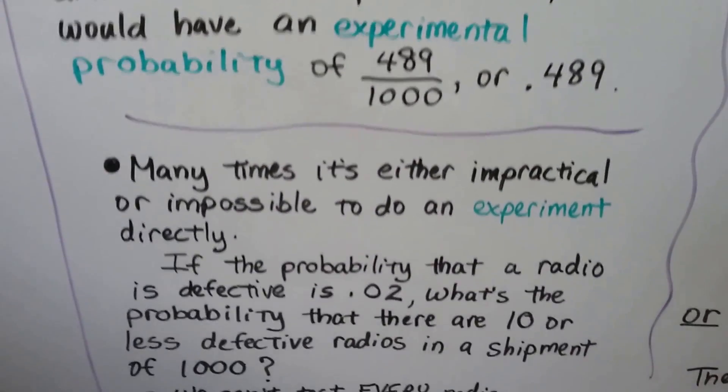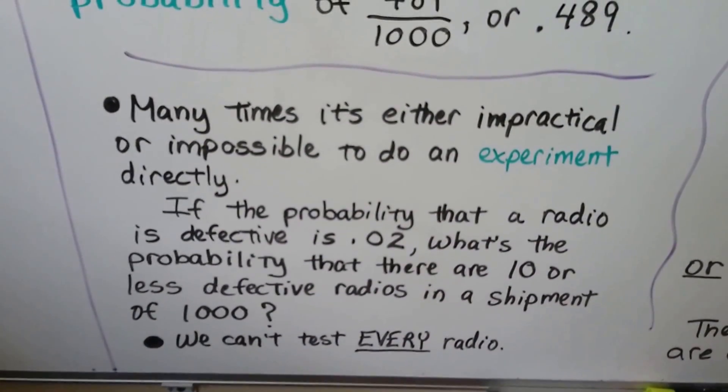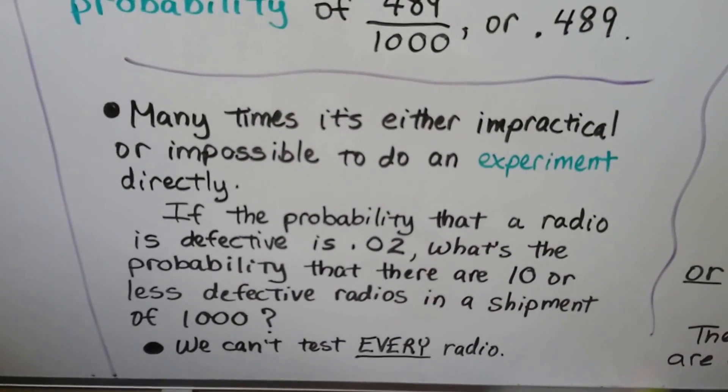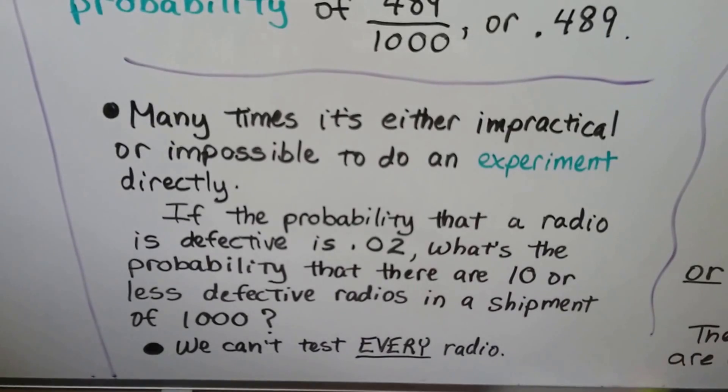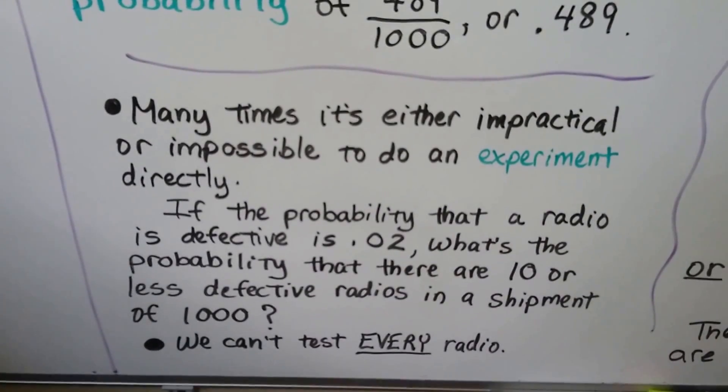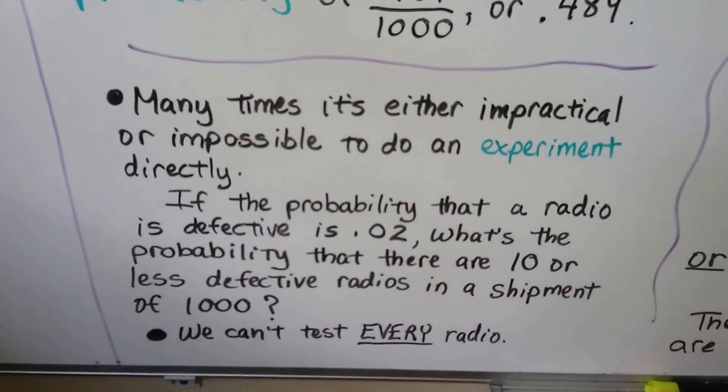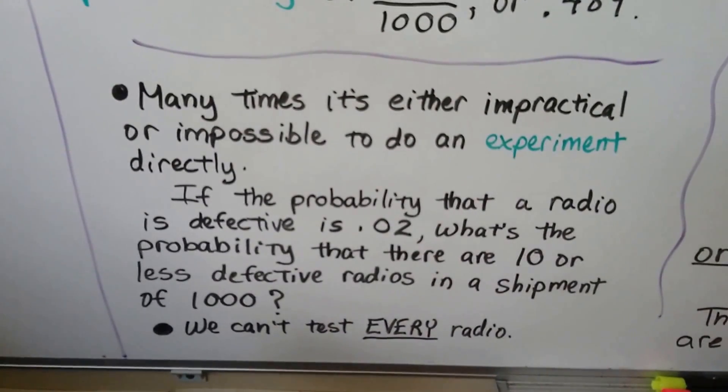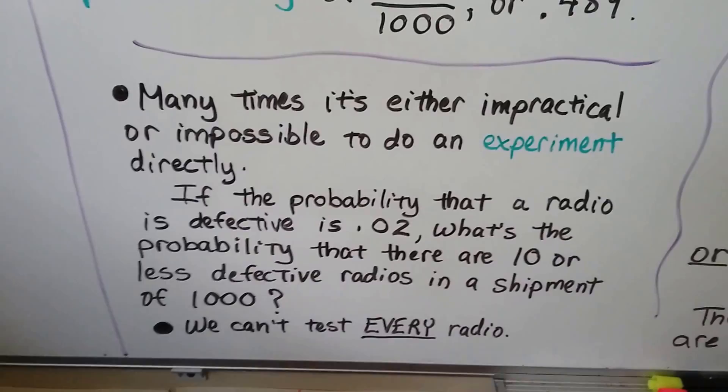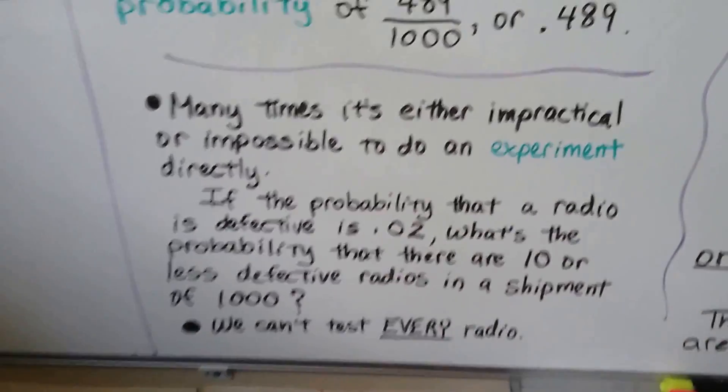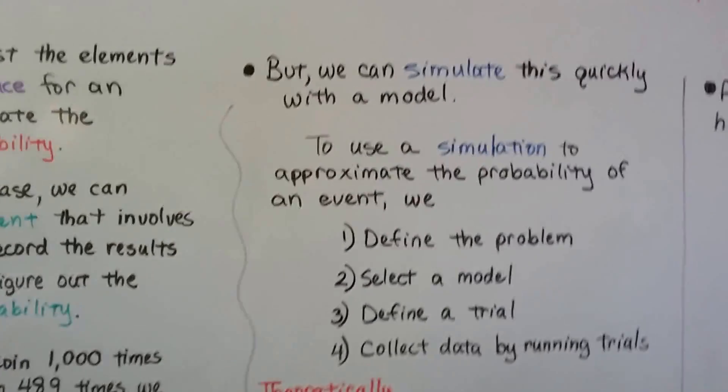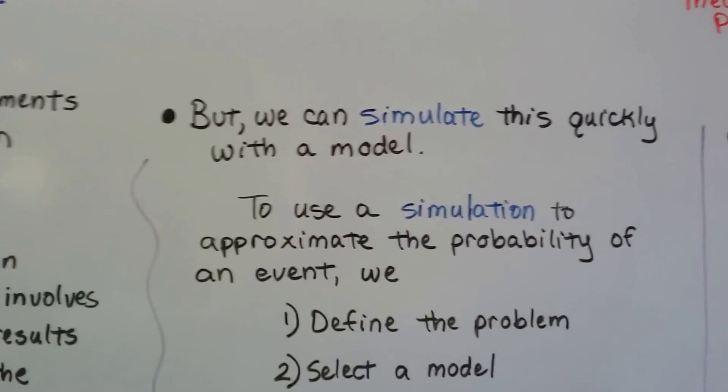Many times it's either impractical or impossible to do an experiment directly. If the possibility that a radio is defective 0.02 times, what's the probability that there are 10 or less defective radios in a shipment of a thousand? We can't test every single radio, but we could do it theoretically. We can also simulate this quickly with a model.